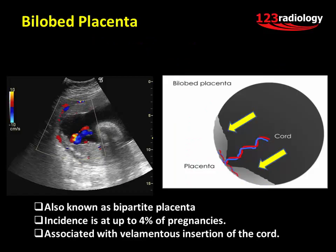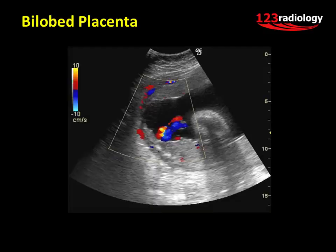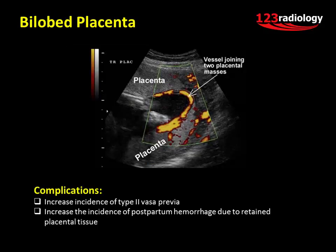A bilobed placenta, also known as bipartite placenta, is a variation in which the placenta is separated into two near-equal lobes. If more than two lobes are present, it is termed trilobed, four-lobed, and so on. The estimated incidence is about four percent. It is associated with velamentous insertion of the cord. Sonographically seen as two separate placental discs of nearly equal size, the cord usually attaches to a thin connecting rim of chorionic tissue bridging the two lobes; less commonly the cord may insert into one of the lobes. It carries an increased incidence of type II vasa previa and may increase the incidence of postpartum hemorrhage due to retained placental tissue.